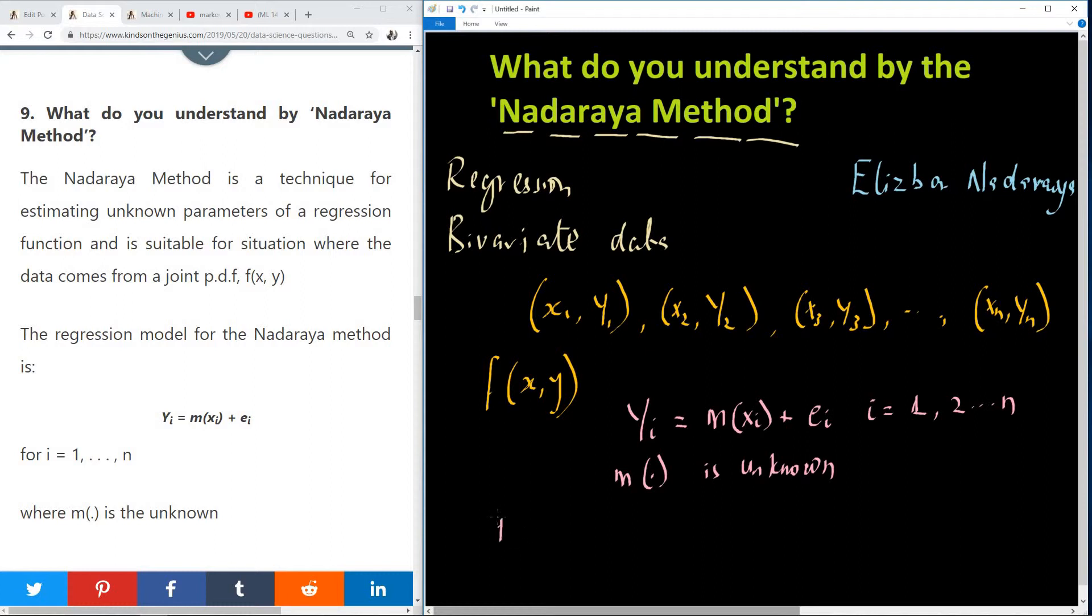So, the error function, this error we have here, e, ei satisfies, now, I'm not going to explain this, I'm just writing it for your information, expected value of ei is equal to 0. The variance of ei is sigma squared. And the covariance for different error terms is equal to 0 as well, where i is not equal to j.